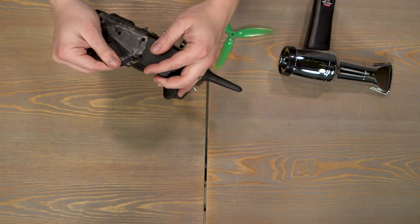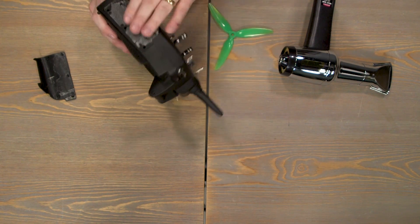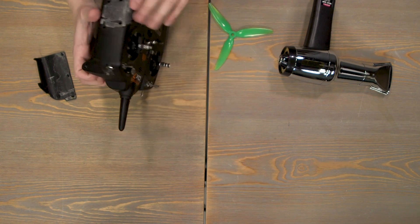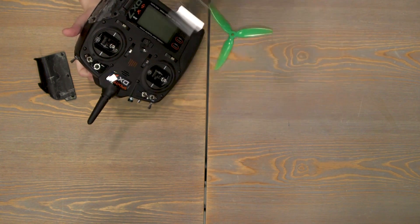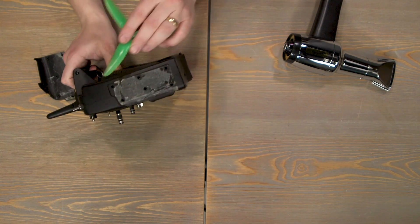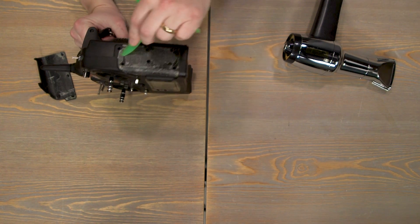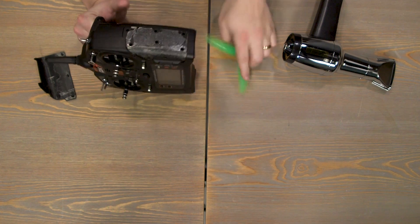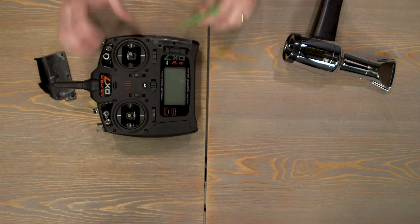Can be kind of a messy job, so be prepared for that. So all this old adhesive that's still here, you can heat it up and roll it away, scrape it off with a plastic scraper like I've got here and get rid of the excess. So let's do that.